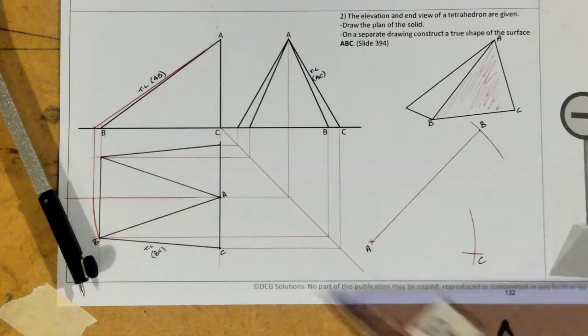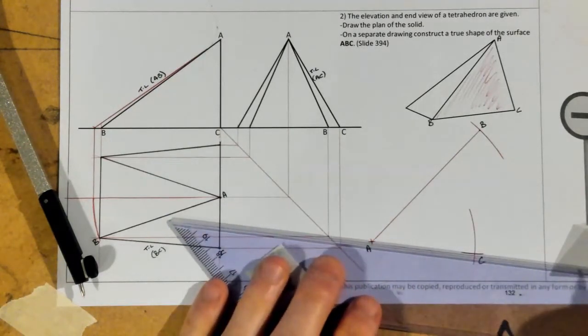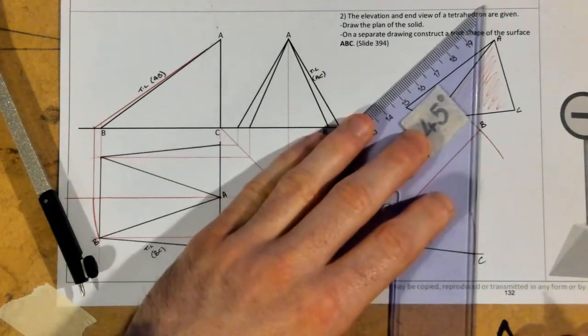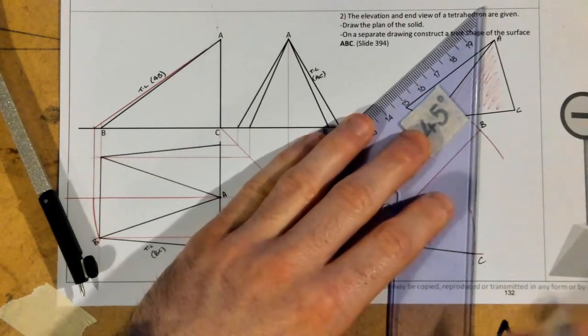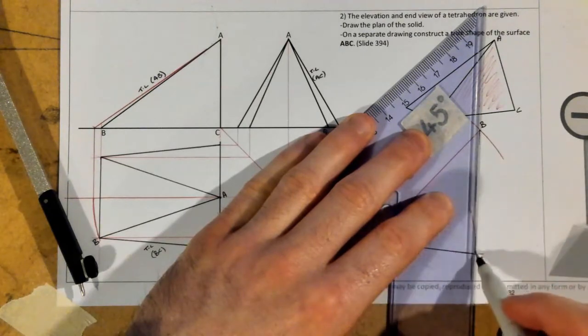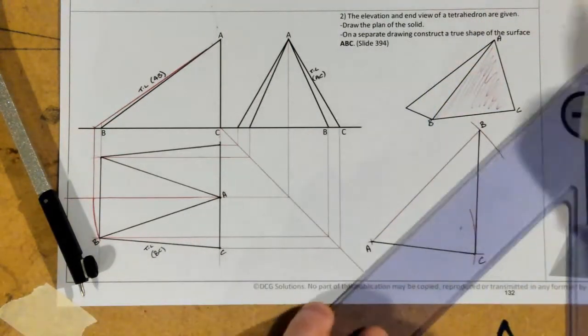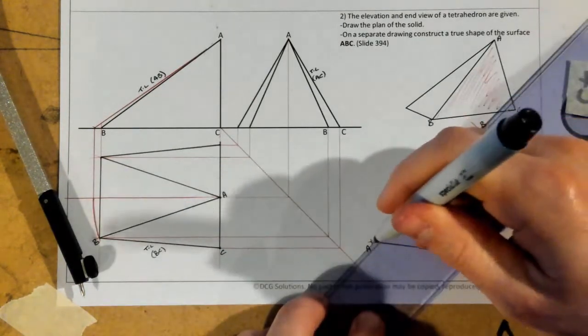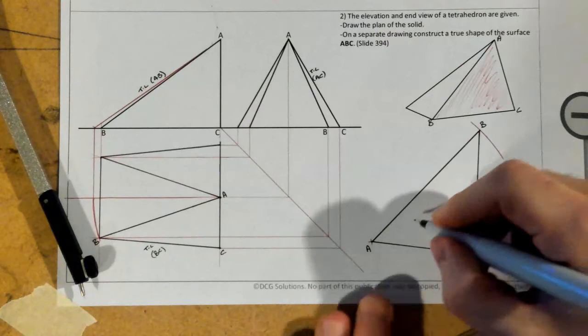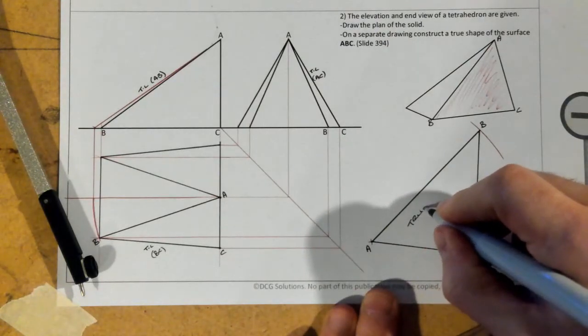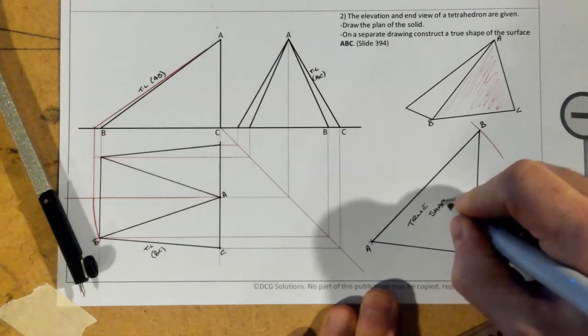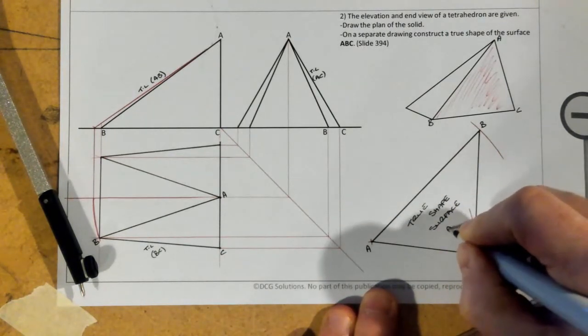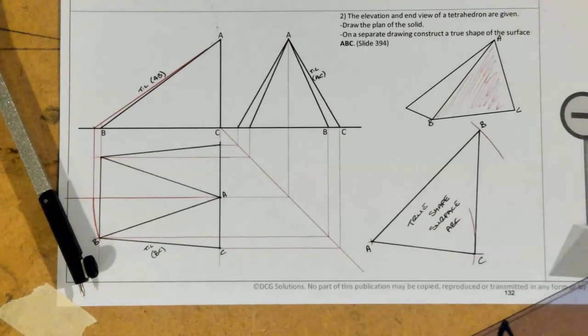And just to be able to complete it, this will be the true shape. That's my line A, C. True length. This is my line B, C. And my original line at the very start that I started with, A, C. So that is the true shape surface A, B, C. Question complete.